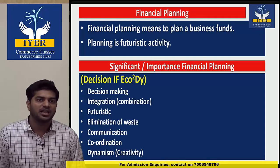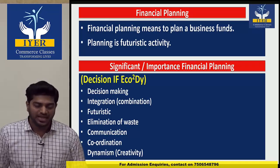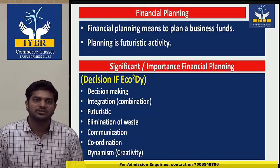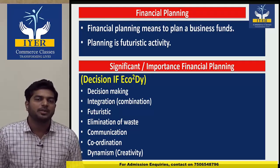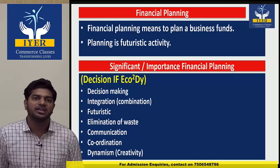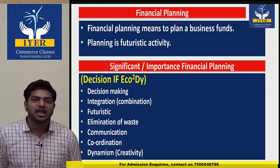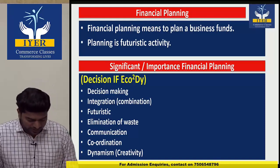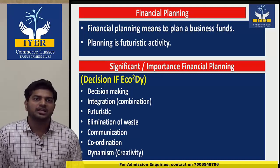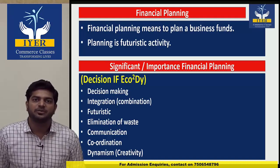Explaining these points: First, decision making — planning is the first step, decision making is the last step. Second, integration — for planning we need combination of all things. Third, futuristic — plans are always made for the future, so planning is a futuristic activity. Fourth, elimination of waste — अगर wasteful expenditure कम होगा, income होने का chance ज़्यादा होगा। Expenses जो हैं company के लिए good नहीं हैं।